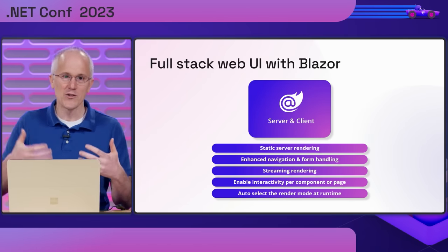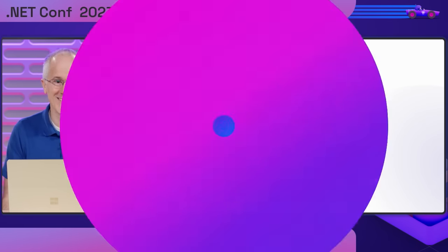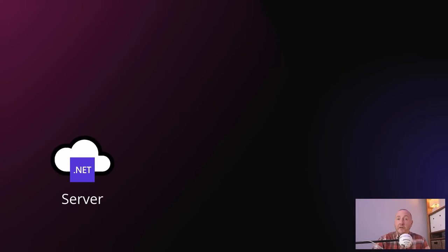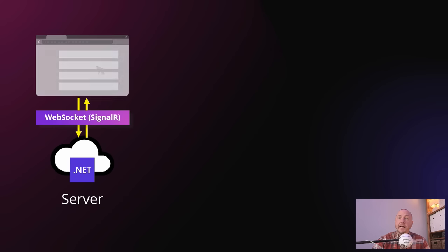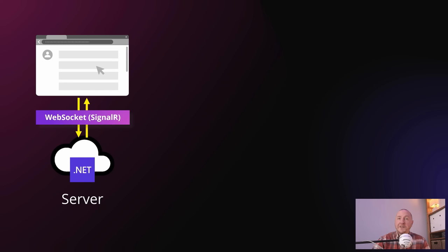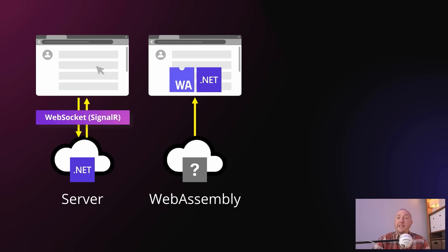Let's go to Steve Sanderson to see what building full-stack web UI with Blazor in .NET 8 looks like. If you've used Blazor before, you probably know we've always had two hosting models: Blazor Server and Blazor WebAssembly. As a quick recap, Blazor Server is a mode where your application runs on a server and communicates with the user's browser using a WebSocket connection with SignalR, so it can send UI updates in real time and receive events back from the user. The other hosting model is Blazor WebAssembly, where you compile your application to run on WebAssembly inside the user's browser.